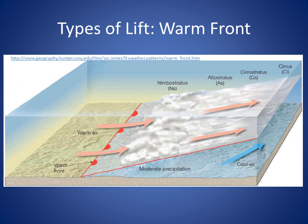Here is another diagram showing a warm front. In this situation, the advancing warm air rises over the cold air mass. As it rises, the air cools and forms cloud droplets and then precipitation. The best upward forcing occurs ahead of the surface warm front. The lifting in the warm front is gradual, so generally you can expect steady light to moderate precipitation ahead of the warm front.